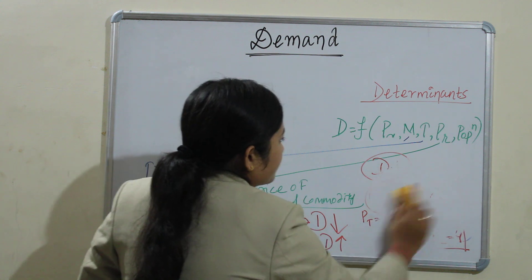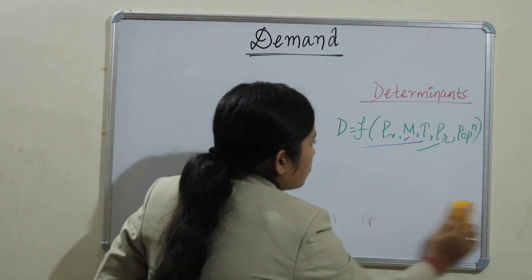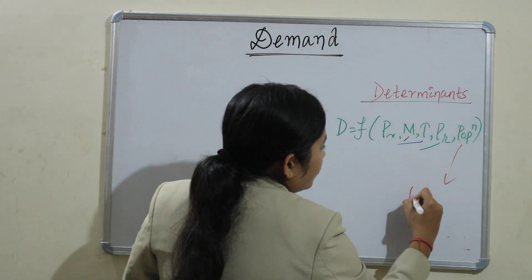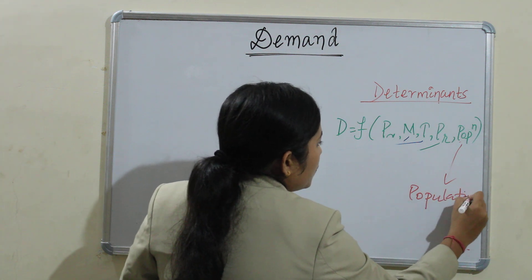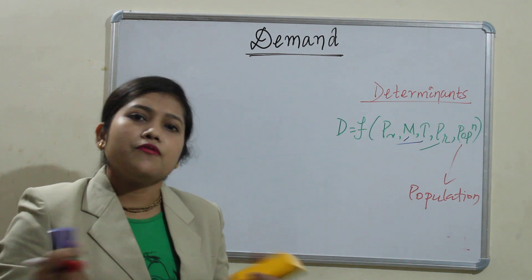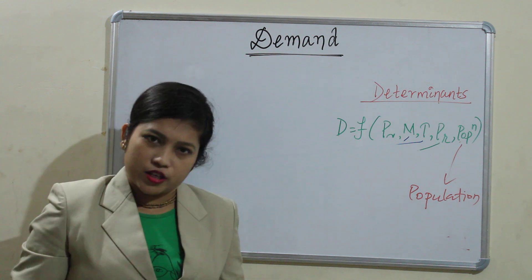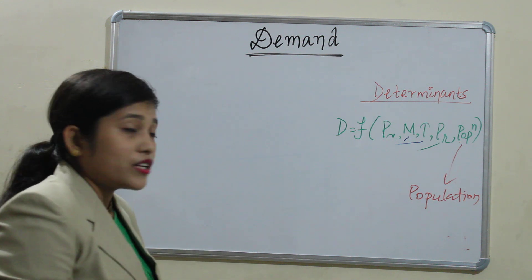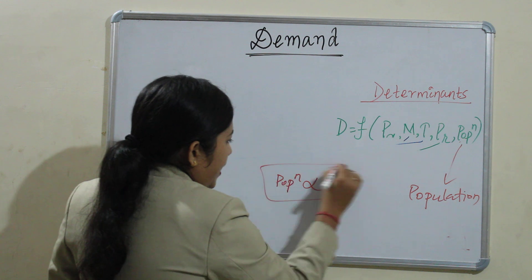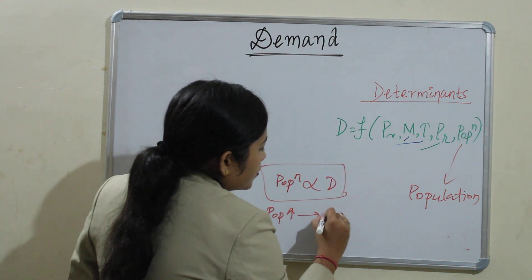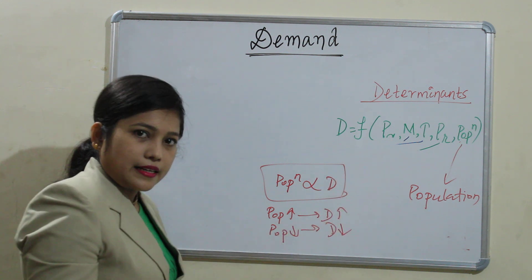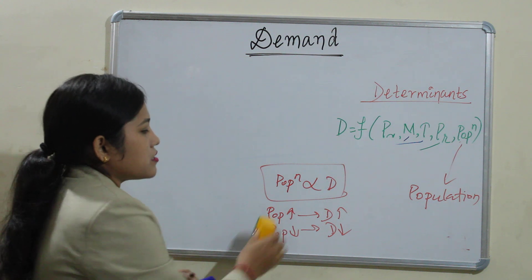The last determinant is population. In a country where the population rate is higher, obviously more demand will be there. Where population is less, demand will be less. So population directly affects demand — population increases means demand increases, and population decreases means demand declines.